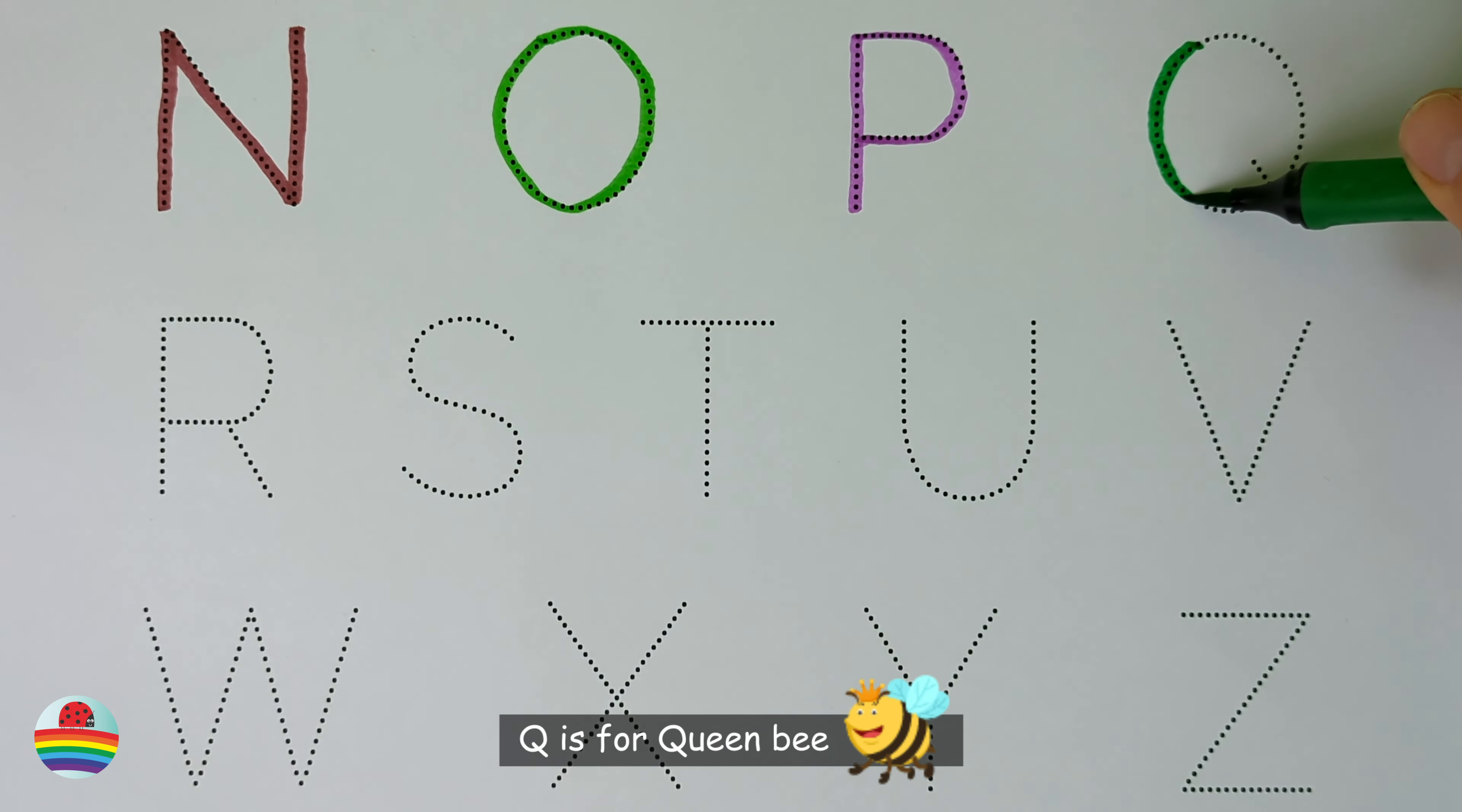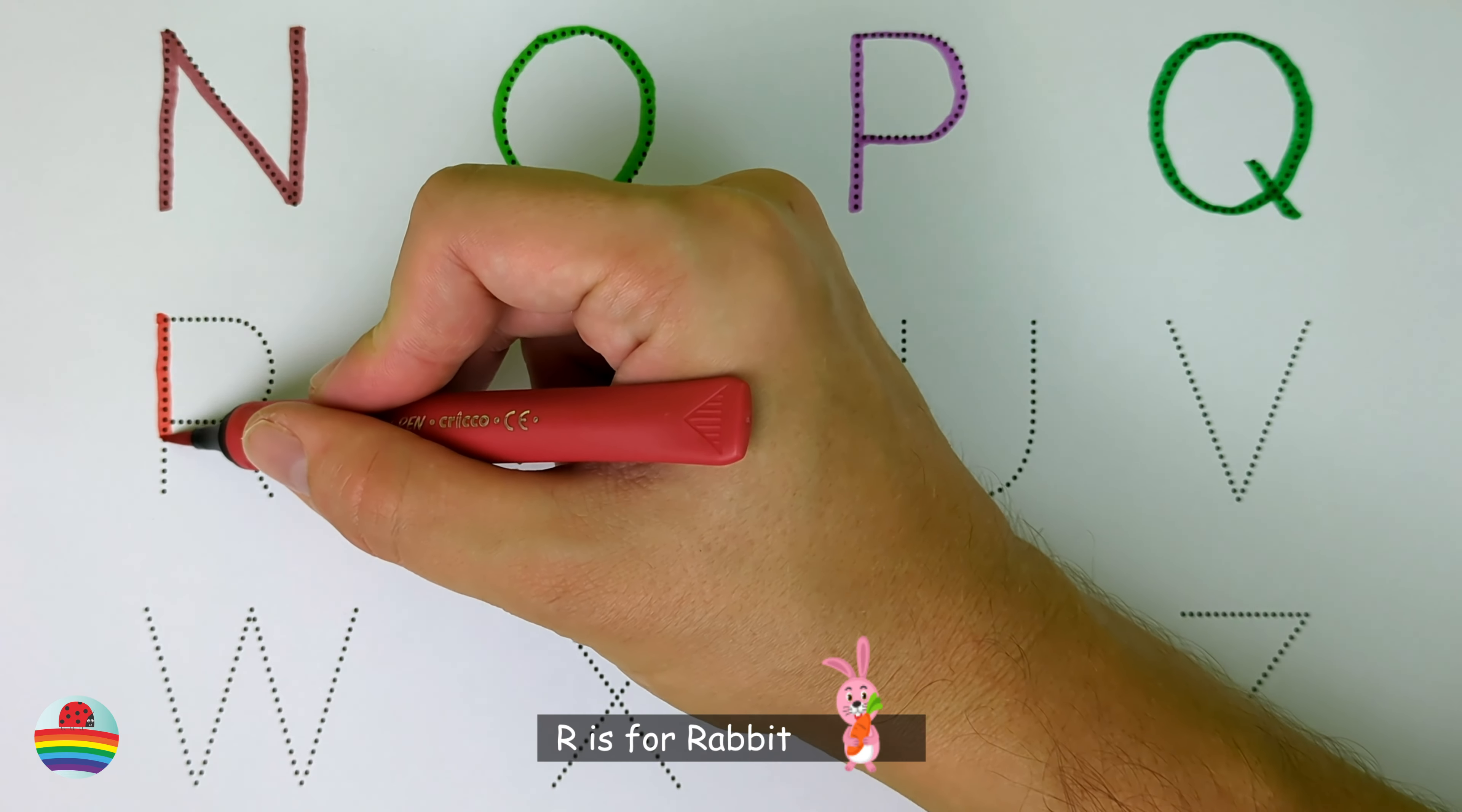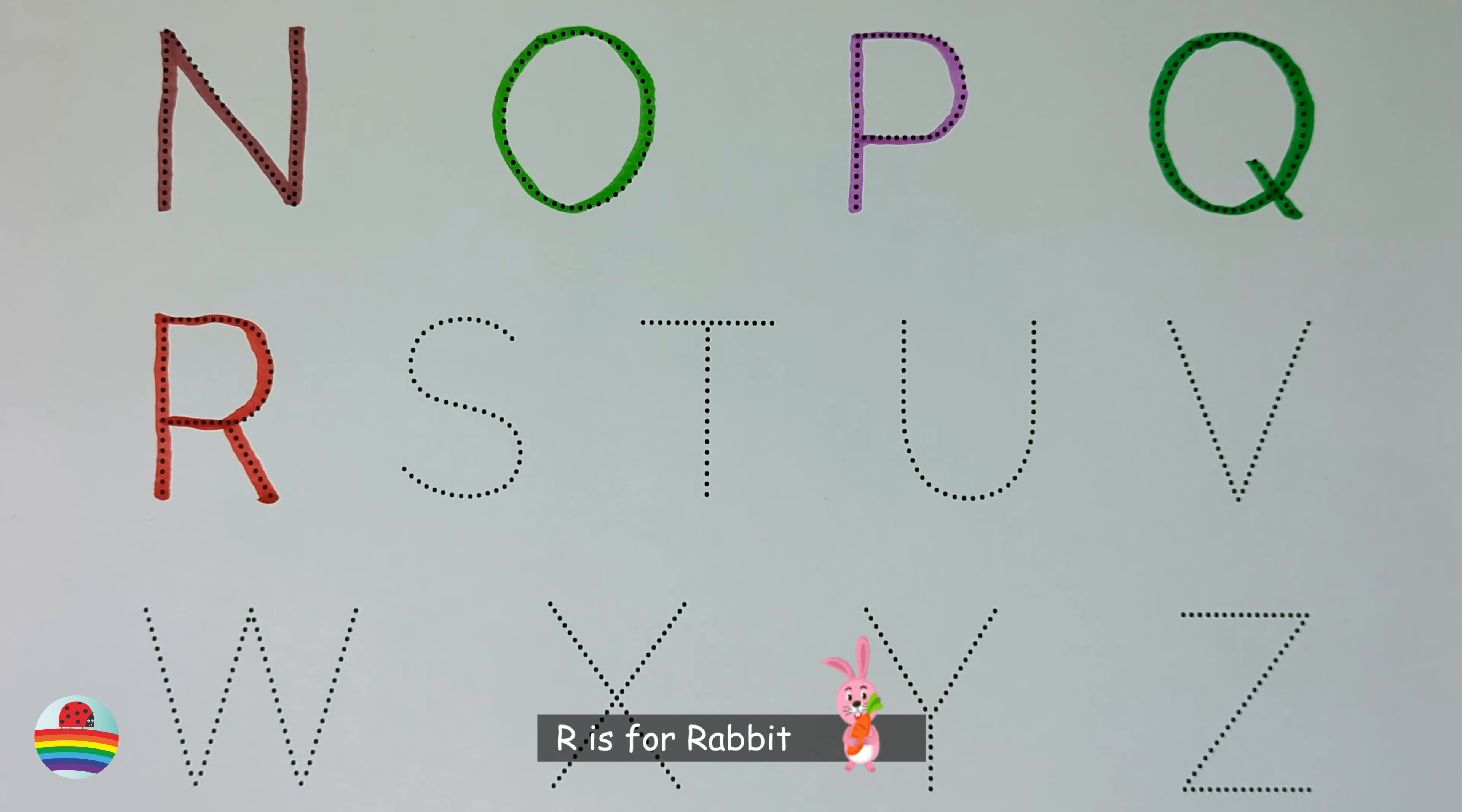Q. Q is for queen bee. R. R is for rabbit.